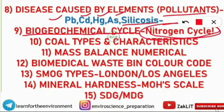The tenth topic is coal types and their characteristics — anthracite, lignite, peat — and their properties: which has the highest moisture content, which is the best quality coal, which has the highest sulfur content. Coal types and their characteristics are very frequently asked.